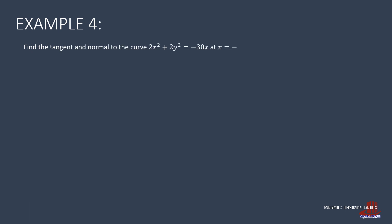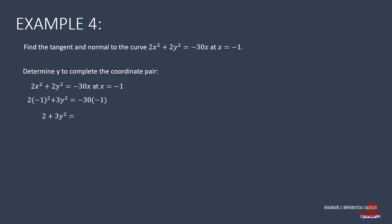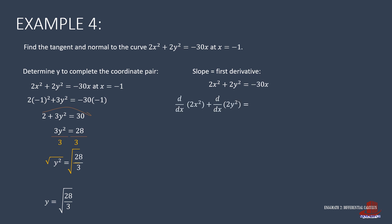Example 4: Find the tangent and normal equations at x equal to negative 1 for the curve 2x squared plus 2y squared equals negative 30x. Plugging x=-1 gives 2 plus 3y squared equals 30. Transposing the constant 2, we get 3y squared equals 28. Dividing by 3, y squared equals 28 over 3. Taking the square root, y is the square root of 28 over 3.